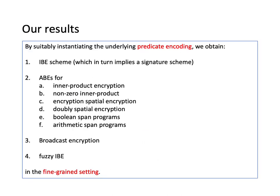Similar to the work of CGW, by instantiating the underlying encoding in different ways, we obtain an ABE scheme, which in turn implies a signature scheme, and ABE schemes supporting various types of Boolean predicates, and also broadcast encryption and fuzzy IBE in the fine-grained setting.